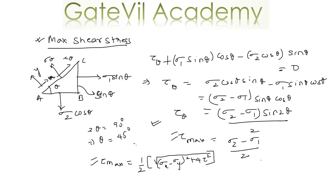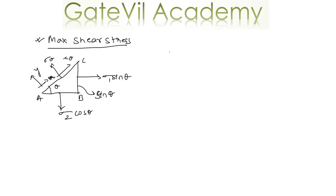For all solids of three dimensions, there must exist three principal stresses: sigma 1, sigma 2, and sigma 3 — the major principal stress, the minor principal stress, and the intermediate principal stress. Let me show you how to calculate the maximum shear stress. For this purpose, let's take a three-dimensional object — we'll have three principal stresses: sigma 1, sigma 2, and sigma 3, and we have to calculate tau max.